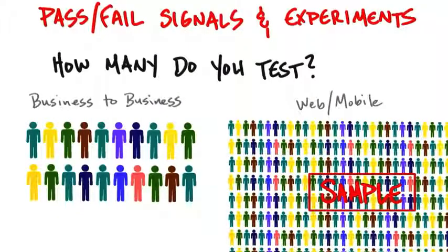Then you'll have a correlation to be able to figure out whether that data is valid or not. So keep that in mind when you're trying to reach hundreds or thousands of people for customer discovery.